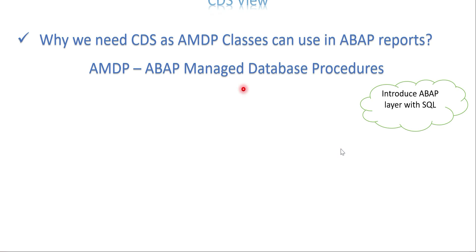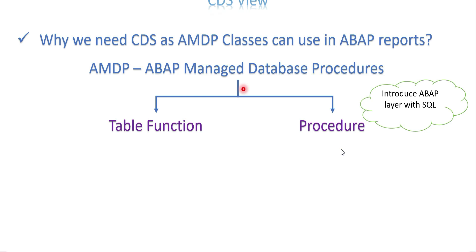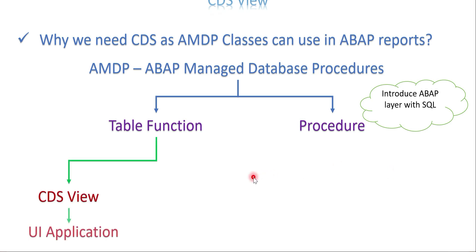That is why we have AMDP. In AMDP we have two options: table function and procedures. It's like adding a layer above layer to achieve the business requirement. So when do we go with table function? When the business requirement can be achieved through CDS views and data needs to be displayed in a UI application.